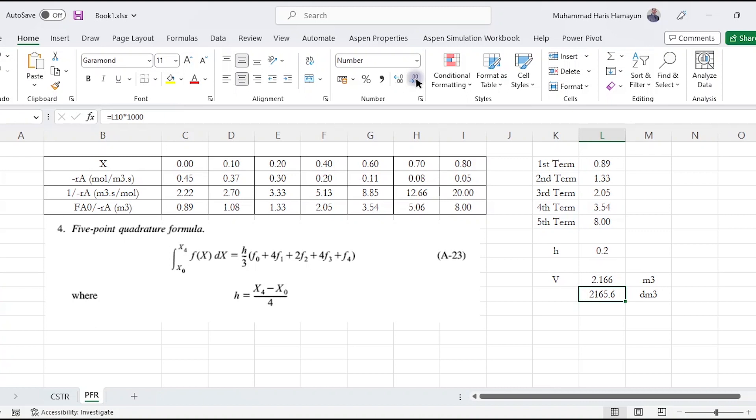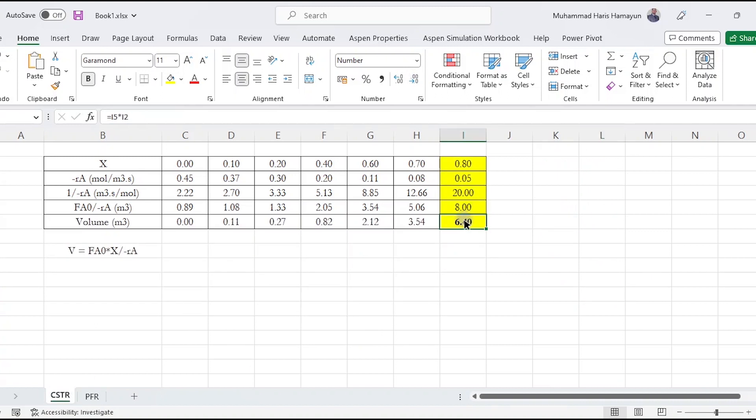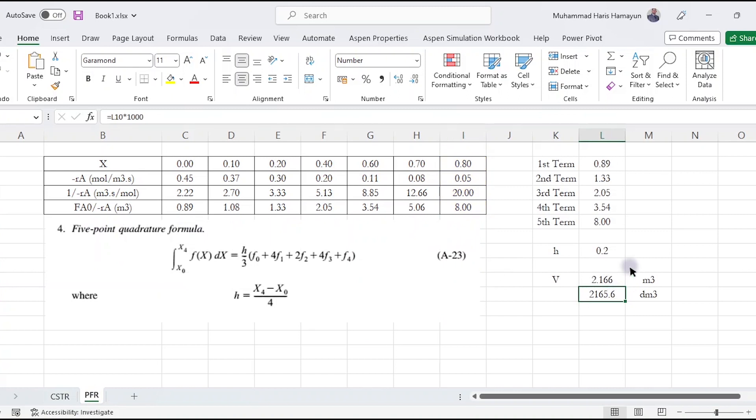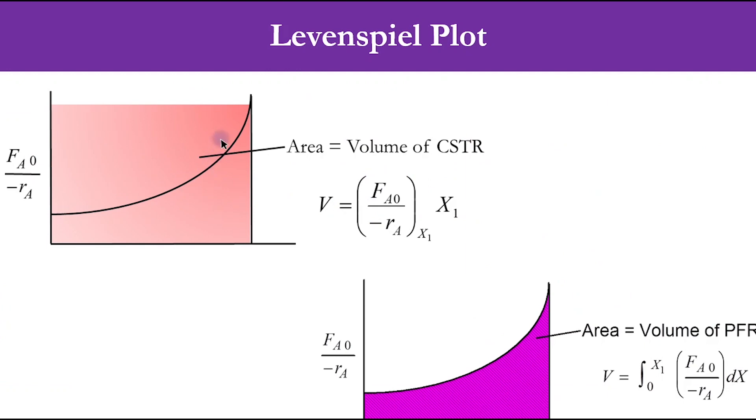We can say that for the same conversion, for 80% conversion, the CSTR volume was 6.4 cubic meters, but for PFR it is 2.166 cubic meters. For isothermal systems, we can safely say that PFR is the best choice, and we have already seen that as well if you see the graph.